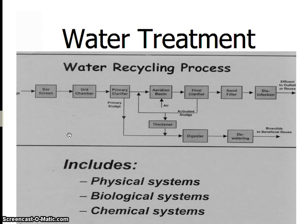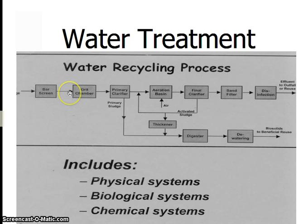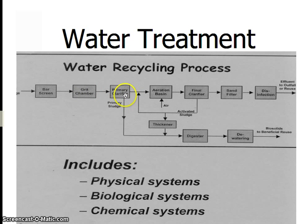Here's another diagram illustrating the same things. The water goes through physical processes: a bar screen where the biggest things like branches and leaves are filtered out, a grit chamber where the medium-sized things settle to the bottom, and then another chance for stuff to settle to the bottom and be taken away. Here again are the air bubbles going up — where the air bubbles are going up, the bacteria is working.